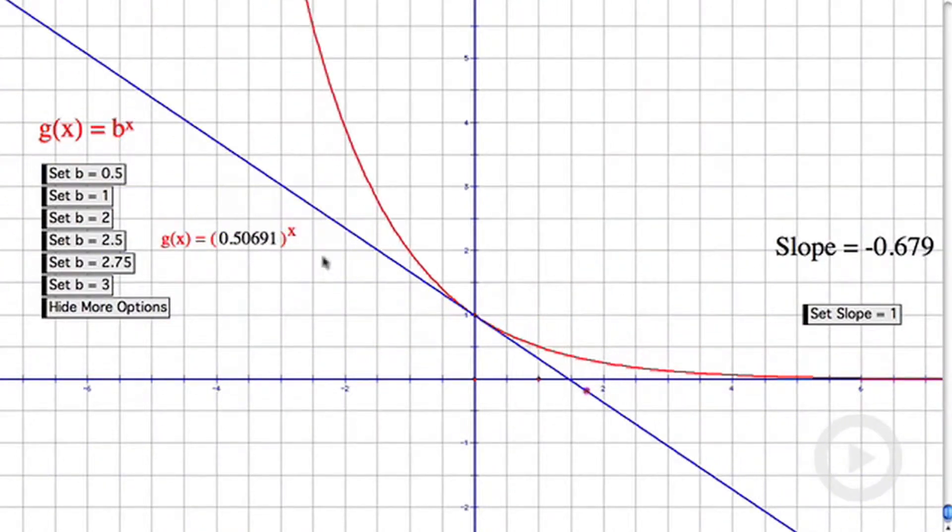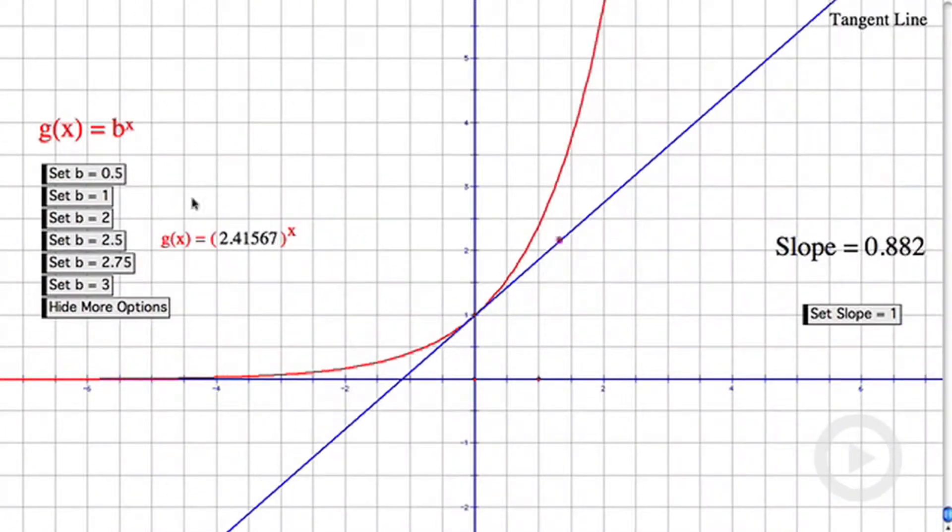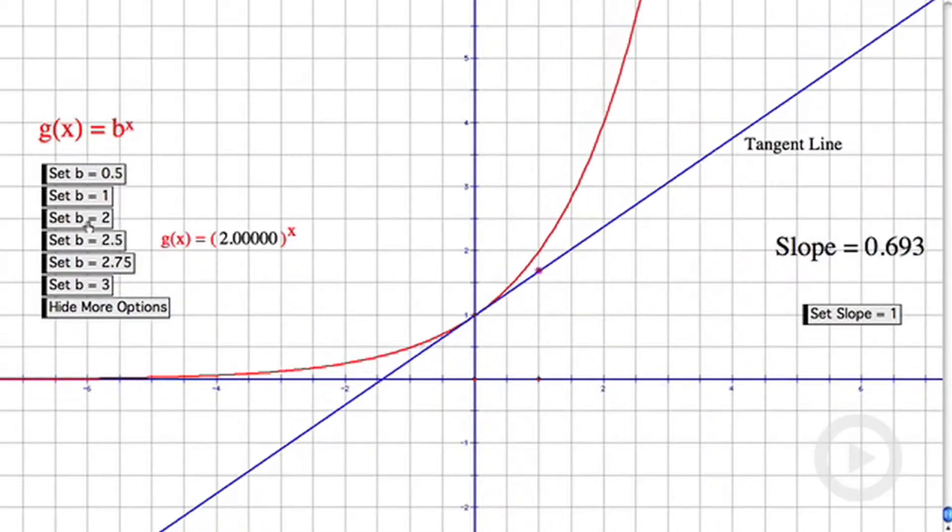And if I moved it so that the tangent line had a negative slope, the base is between 0 and 1. Okay, let's take a look at some particular values.